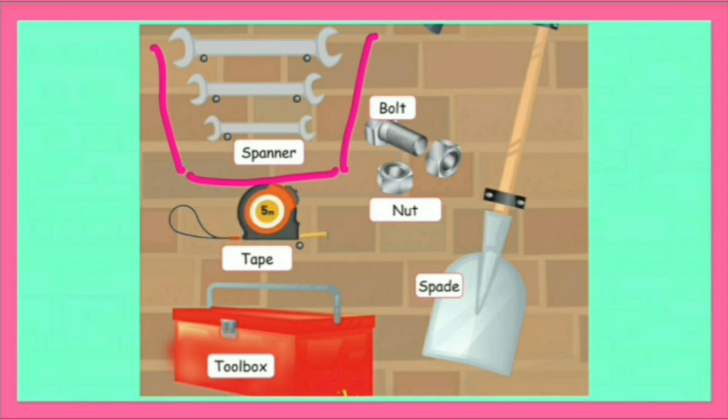Bolt. Bolt is a small piece of metal that is used with another piece of metal, that is a nut, for fastening things together.